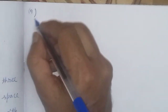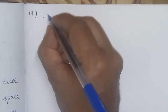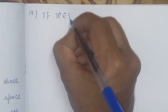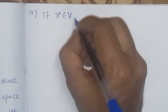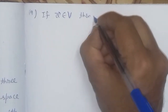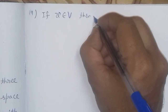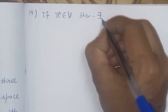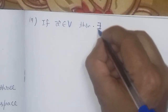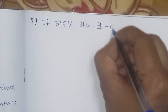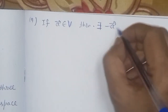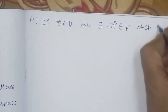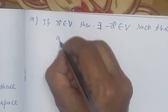The next property is the existence of an Additive Inverse. For every A belonging to V, there exists a vector minus A which also belongs to V, such that A plus minus A equals the additive identity — the zero vector. This is our fourth property.